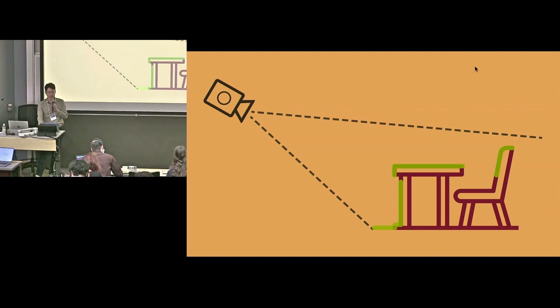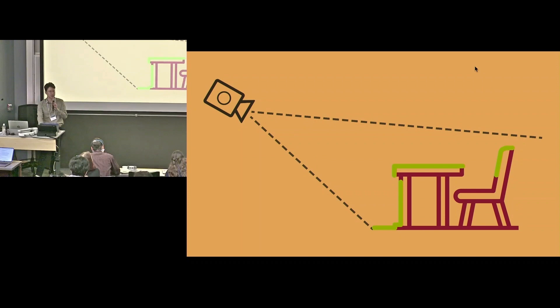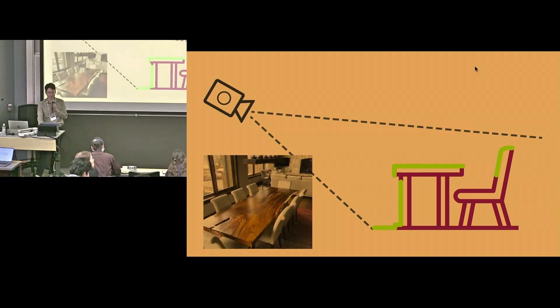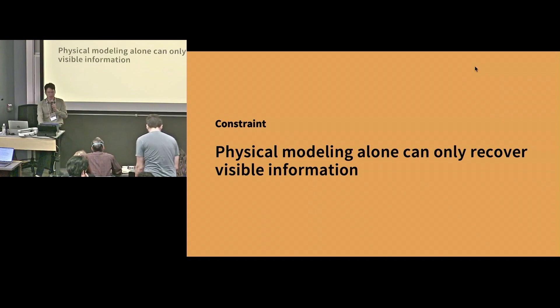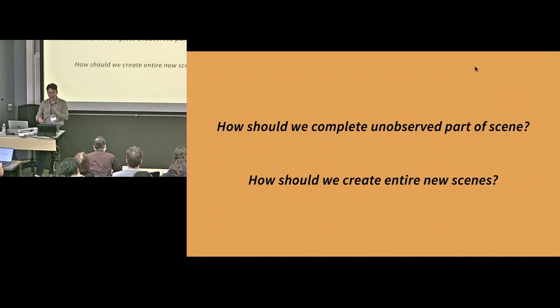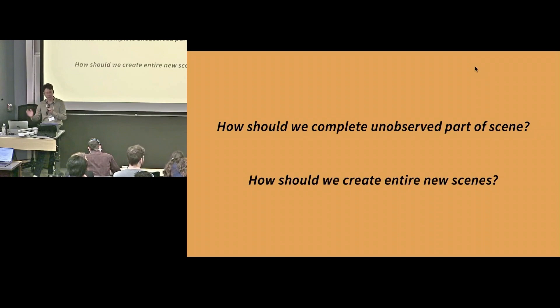However, I quickly realized during my PhD that physical properties are not enough, because the images we capture only capture the observed parts of the scene. A vast amount of the scene remains unobserved and unreconstructed, so we cannot render or simulate interactions with those invisible parts. For example, in scenes with desks and chairs, large parts of the chairs are missing from observations. Physical modeling alone can only recover visible information, raising the question of how to complete unobserved parts or create entirely new scenes.